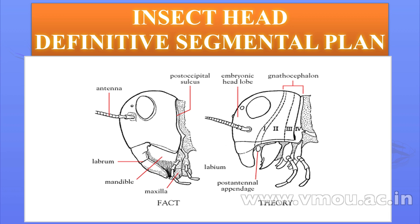The fact is: you can see an acron followed by the antenna segment, labral, mandible, maxillary, and labium segment, all joining together with the cervix or neck. However, theoretically, the embryonic head lobe and post-antennal appendages show that the antennal appendage is followed by the post-antennal appendage, then the gnathocephalon — which is first, second, third, and fourth. There are actually four segments in the gnathocephalon. This will be explained in later diagrams.